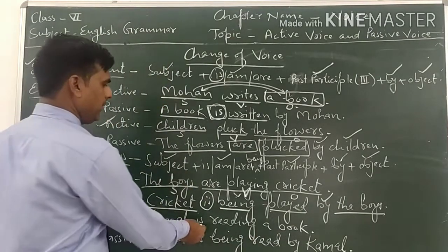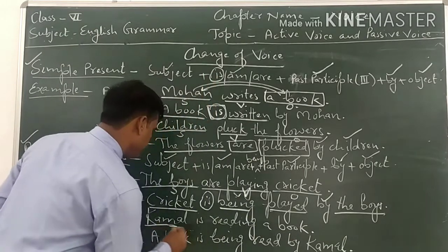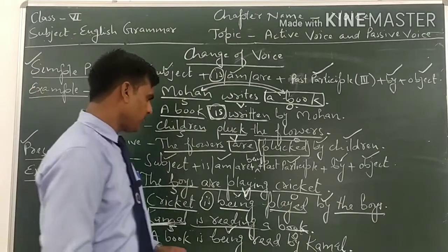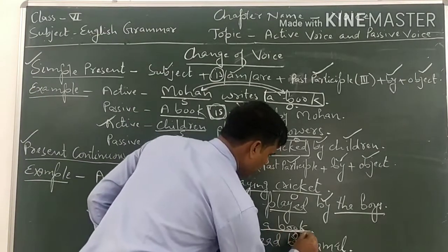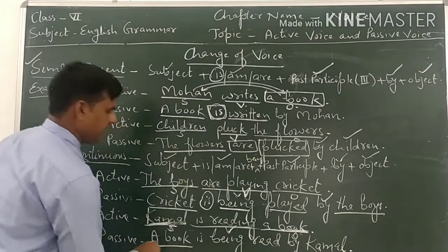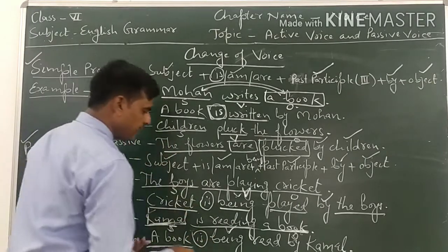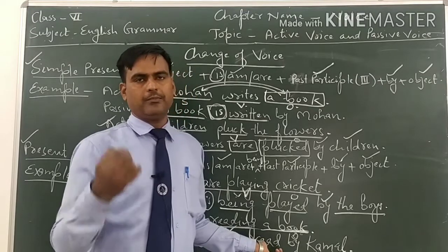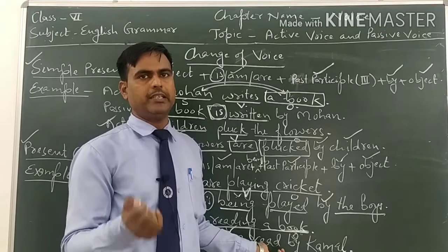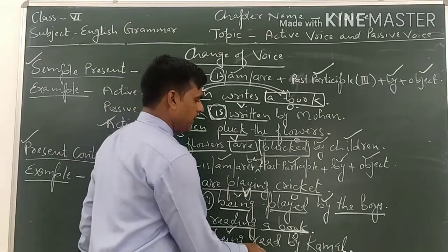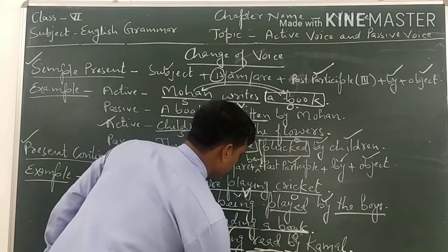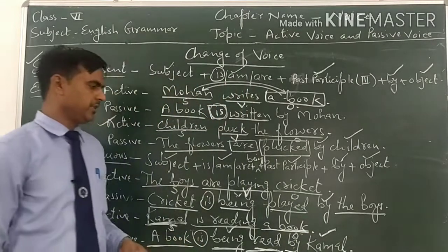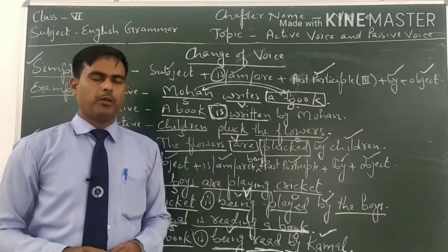The next example is: Kamal is reading a book. 'Kamal' is the subject and 'a book' is the object. In passive voice, 'a book' becomes the subject. Since it is singular, we use 'is,' then 'being.' The main verb is 'read' — the third form of 'read' is written the same but pronounced differently. So the passive voice is: A book is being read by Kamal. After the main verb in third form, we write 'by Kamal.'